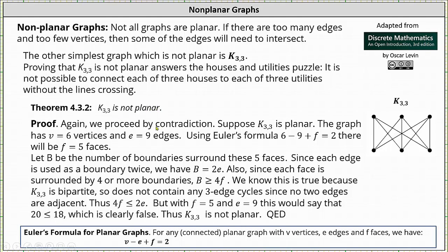Again, we proceed using proof by contradiction. Suppose K3,3 is planar. The graph has v equals 6 vertices and e equals 9 edges. Using Euler's formula, we have 6 minus 9 plus f equals 2. Solving for f, we have f equals 5 faces.